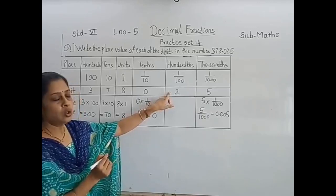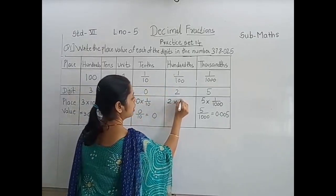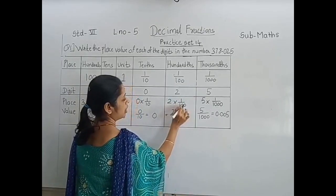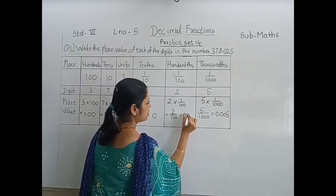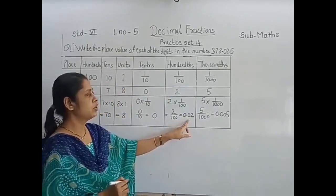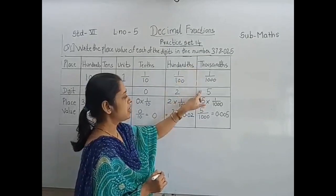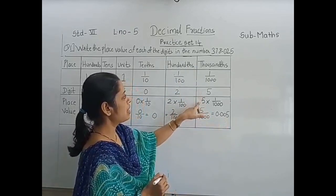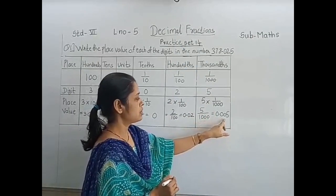Next digit is 2. The place of 2 is the 100th place, so we have to multiply 2 by 1/100. So 2 upon 100 is written as 0.02 and the place value of 2 is 0.02. Next digit is 5. The place of 5 is the 1000th place and the place value of 5 is 0.005. We multiply 5 by 1 upon 1000, so we get 5 upon 1000, which is written as 0.005.